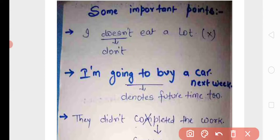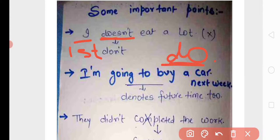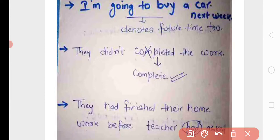Error 1: 'I doesn't eat a lot' — 'doesn't' is incorrect here because 'I' is first person, and with first person we use 'do not', not 'does not'. Error 2: 'I am going to buy a car next week' — this shows general future; sometimes present continuous tense also denotes future time. Error 3: 'They did not completed the work' — as explained, 'did not' is always followed by V1, so 'completed' should be 'complete': 'They did not complete the work.'